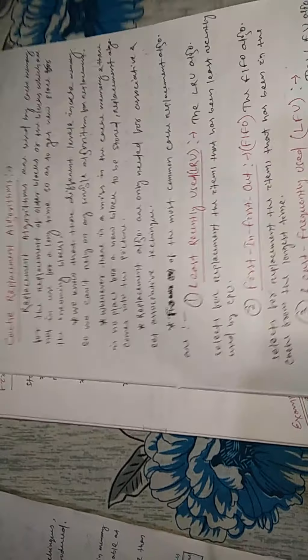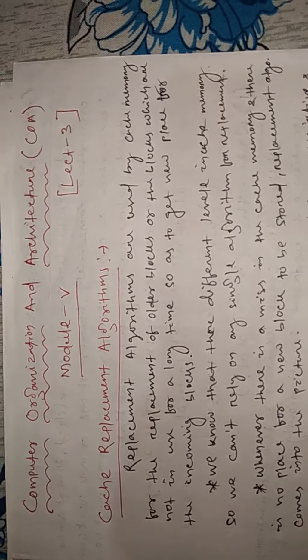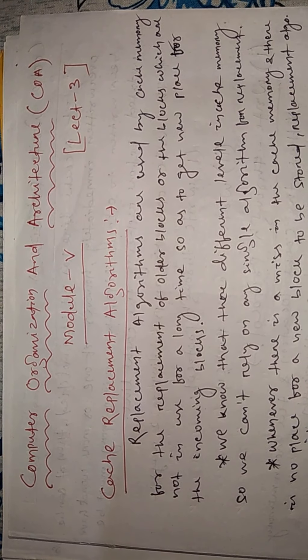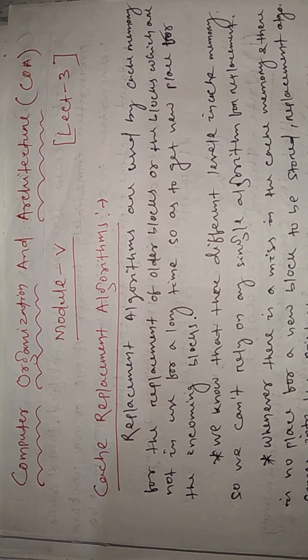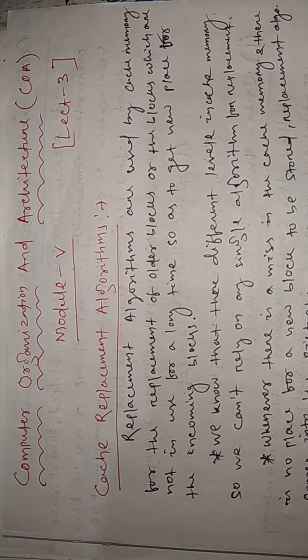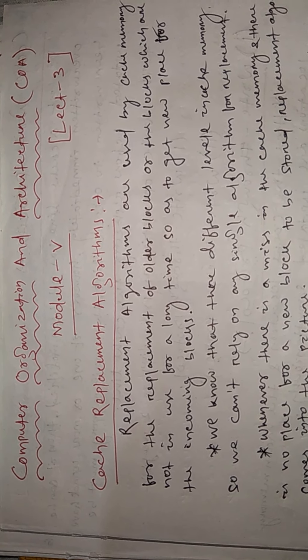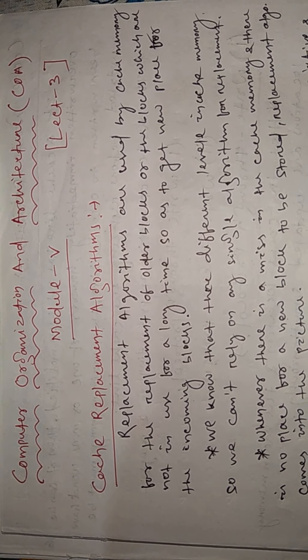When one copy of an operand is changed, the other copies of the operand must be changed also. Cache coherence is the discipline that ensures that changes in the value of shared operands are propagated through the system in a timely fashion — so when you change one copy in main memory, you must also change the other copies in each cache memory.